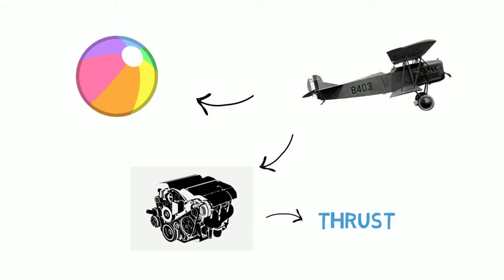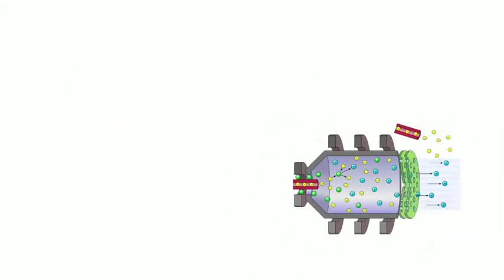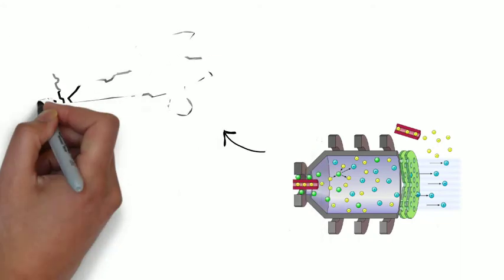And to keep the whole aircraft neutral, there is a neutralizer that is spraying electrons into the exhaust at a rate that keeps the spacecraft electrically neutral.